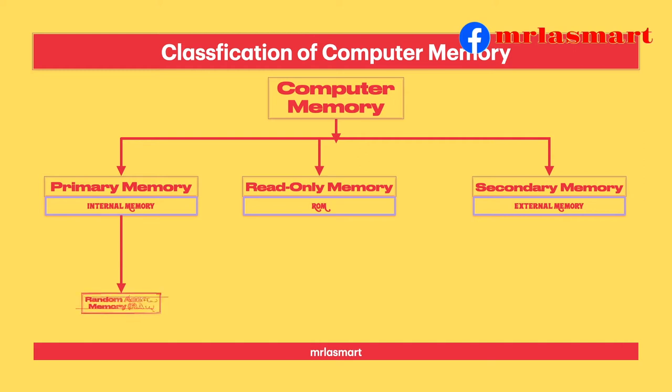The CPU can randomly access any storage location in this memory, so it is also called Random Access Memory.